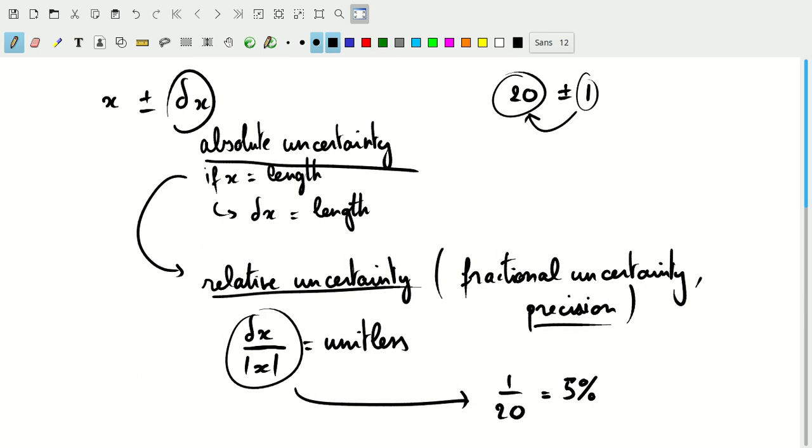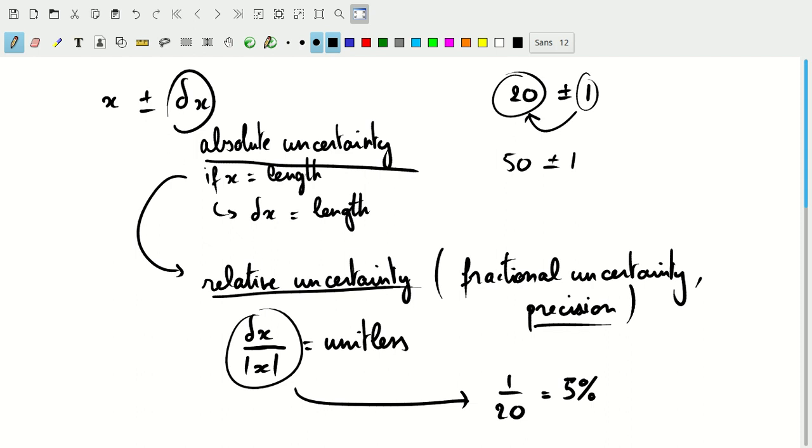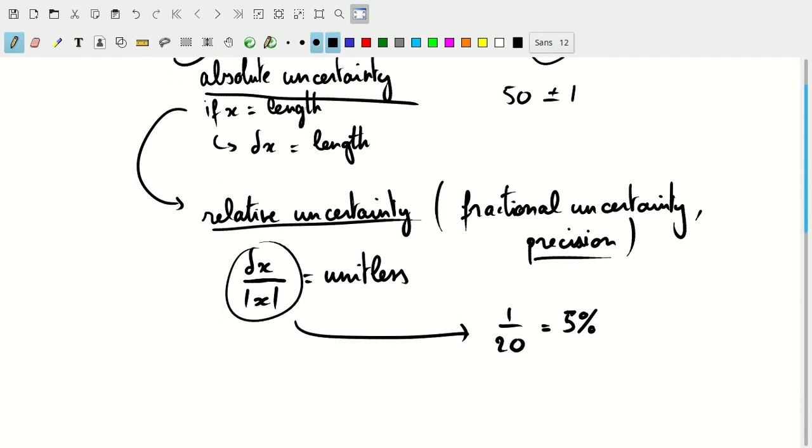Now if we have another value, 50, which also is given with the same number of significant figures—2 significant figures—so the uncertainty there is also 1. This will have a relative uncertainty that's 1 over 50, or 2 percent.